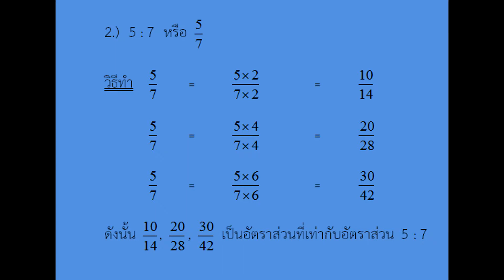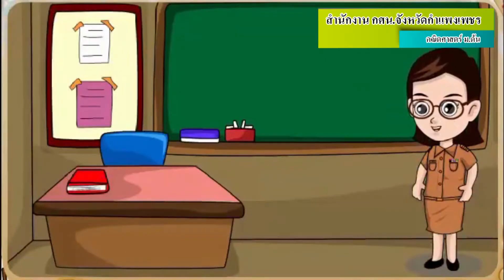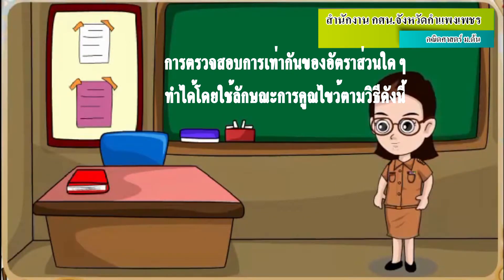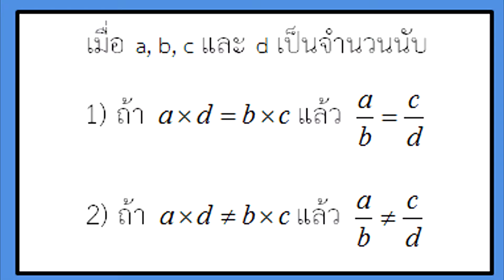อัตตาส่วน 10×14, 20×28, 30×42 เป็นอัตตาส่วนที่เท่ากับอัตตาส่วน 5×7 เมื่อเราได้อัตตาส่วนที่เท่ากันแล้ว ต่อไปเราจะมาดูการตรวจสอบการเท่ากันของอัตตาส่วน So we can do this with a, b, c, and d.